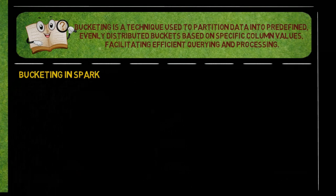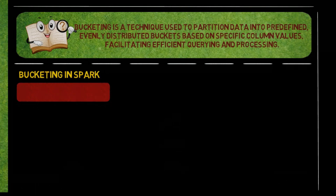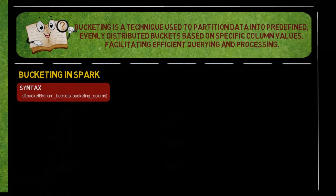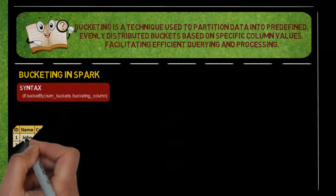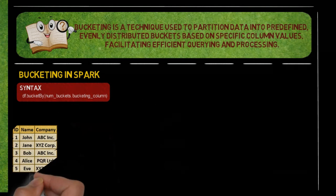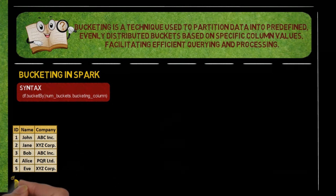To bucket data in Spark, you specify the desired number of buckets and one or more columns to use for partitioning. Spark then distributes the data into the specified number of buckets based on the hash value of the partitioning column. This ensures that similar values are grouped together, optimizing data retrieval and processing.